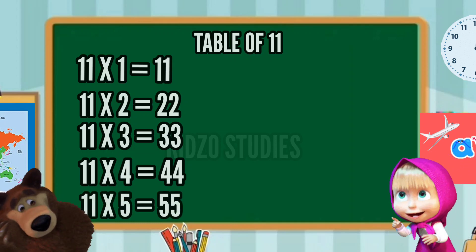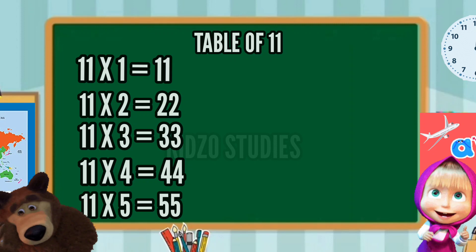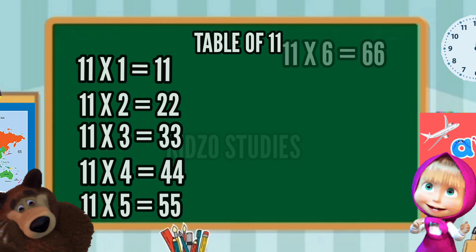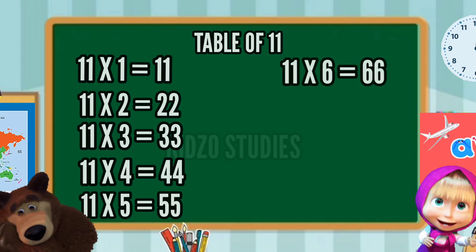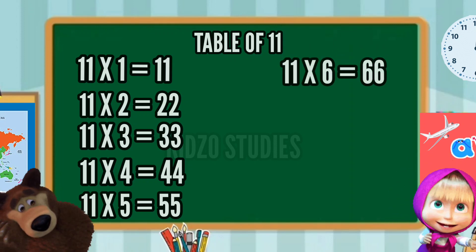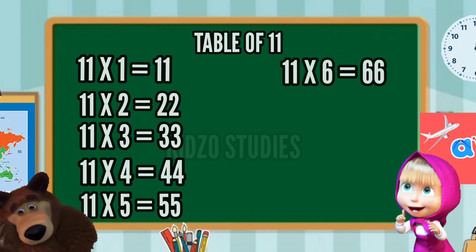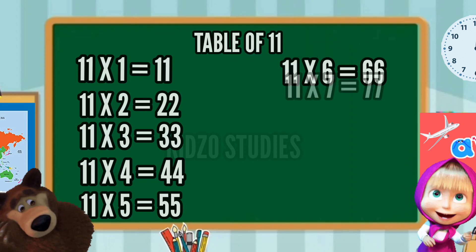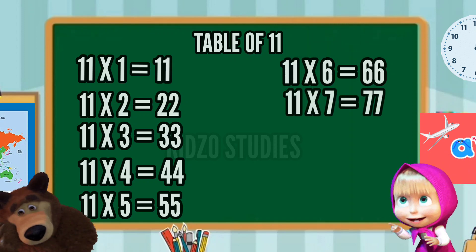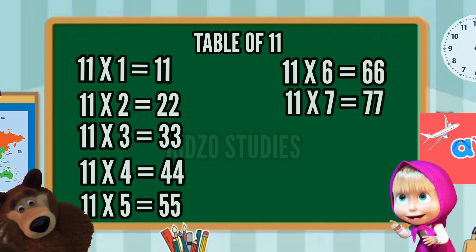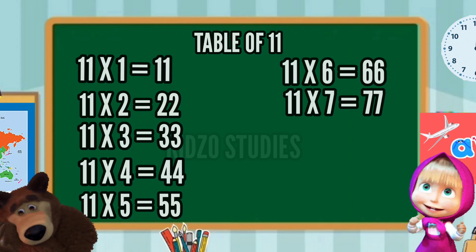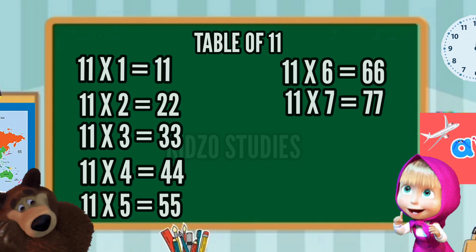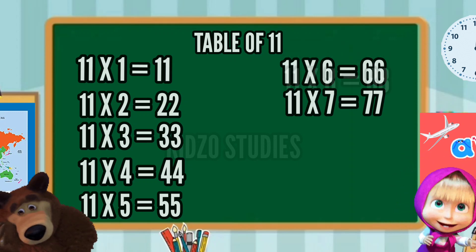Eleven fives are fifty-five. Eleven sixes are sixty-six. Eleven sevens are seventy-seven.